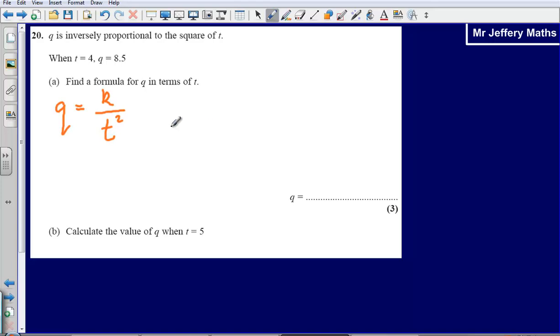Now what I am then going to do is I am going to substitute these two values into this formula to find out the value of k. That will give me a formula for q in terms of t. So by substituting in here, I get q is equal to 8.5 and that is equal to k divided by t squared. So t is 4, so k over 16.